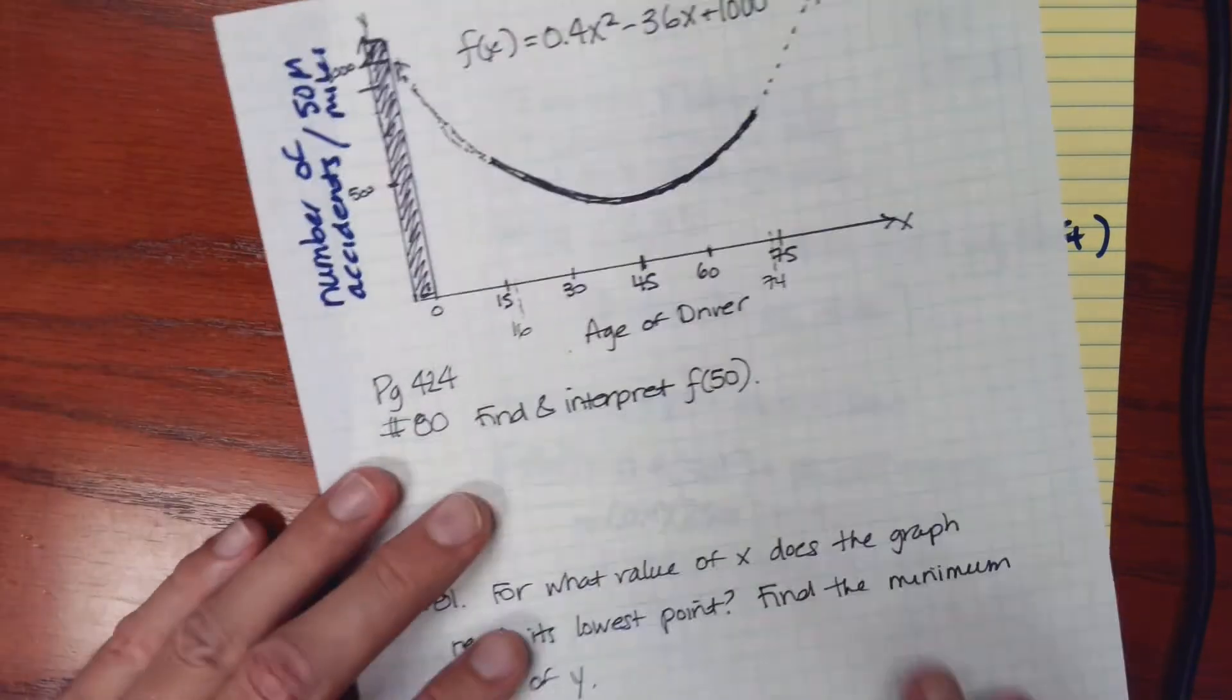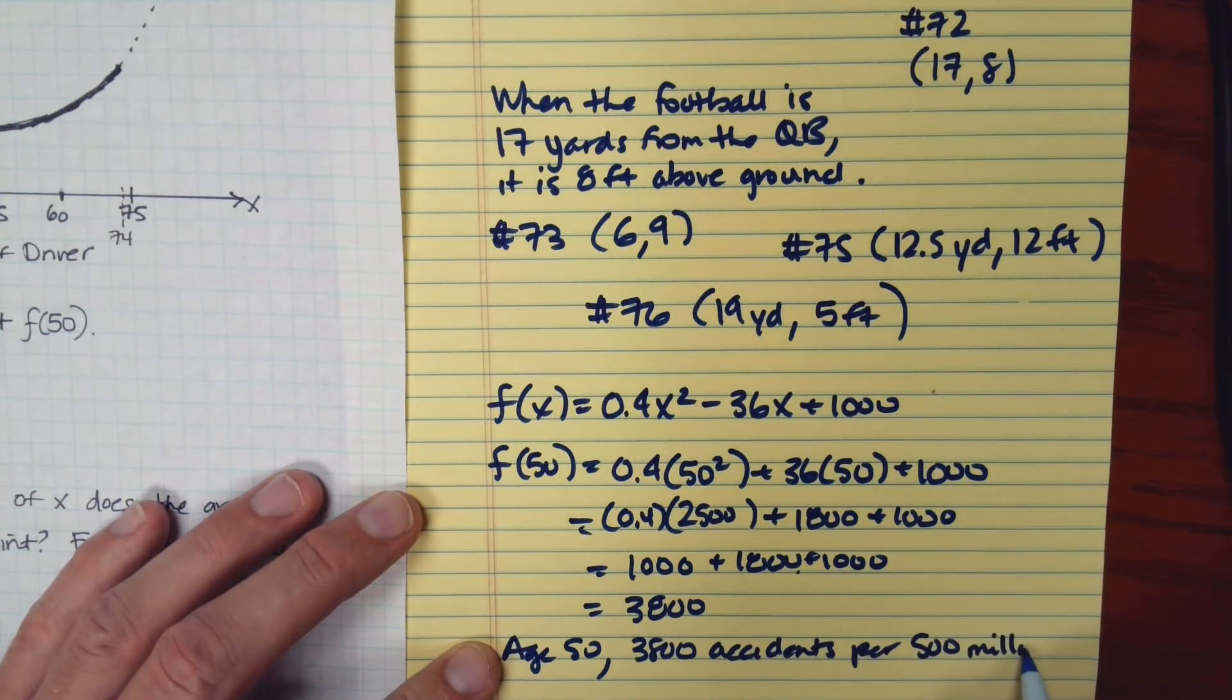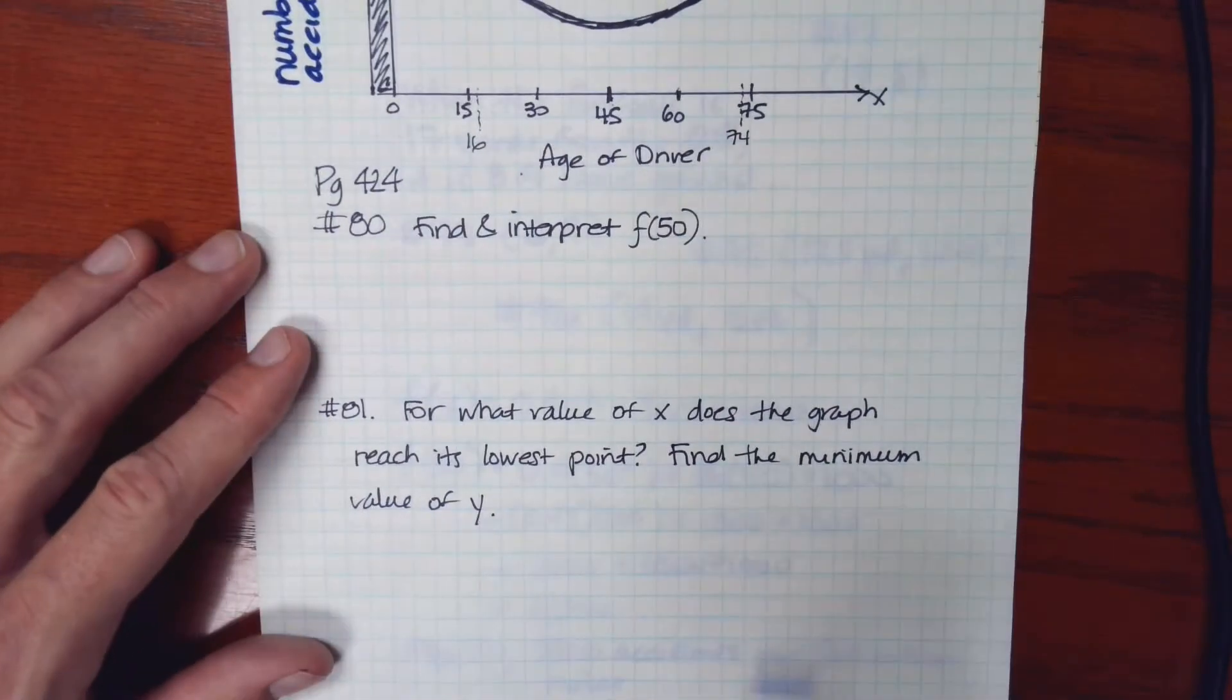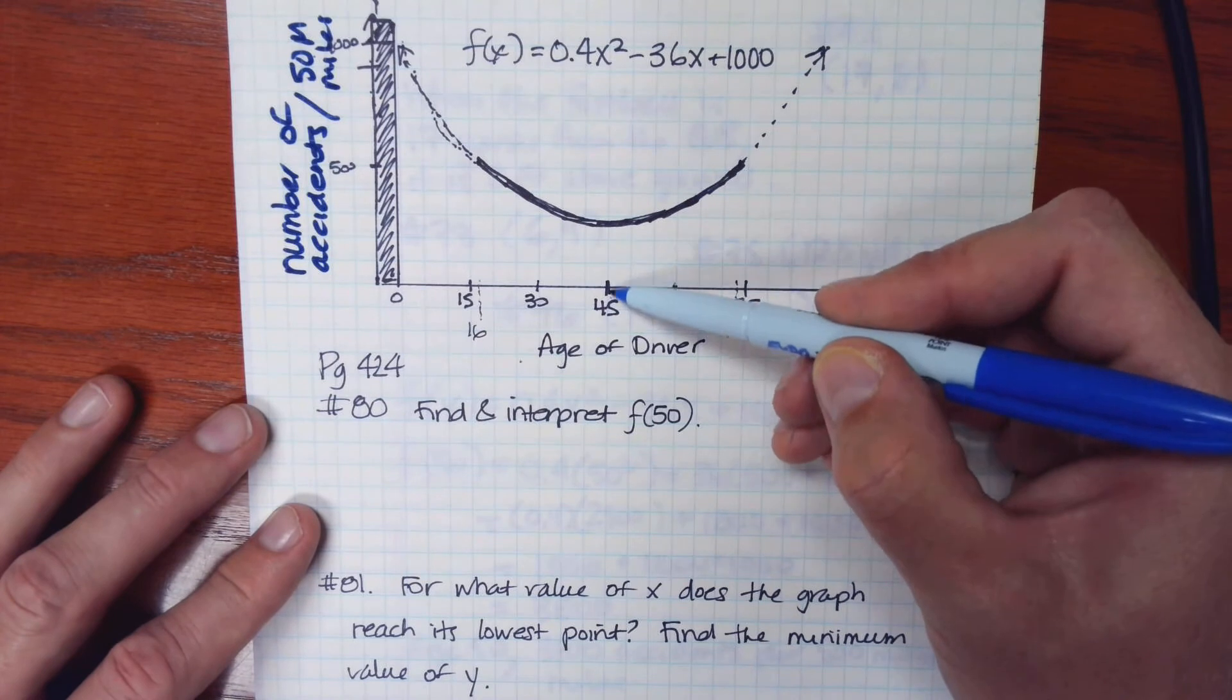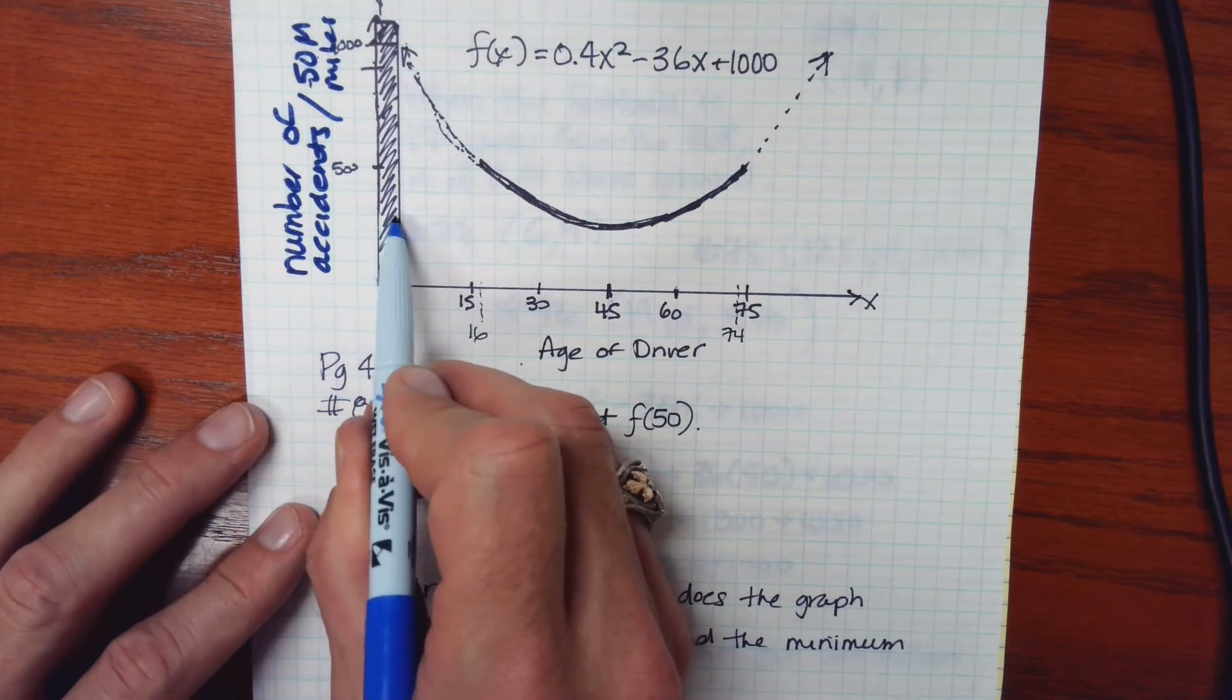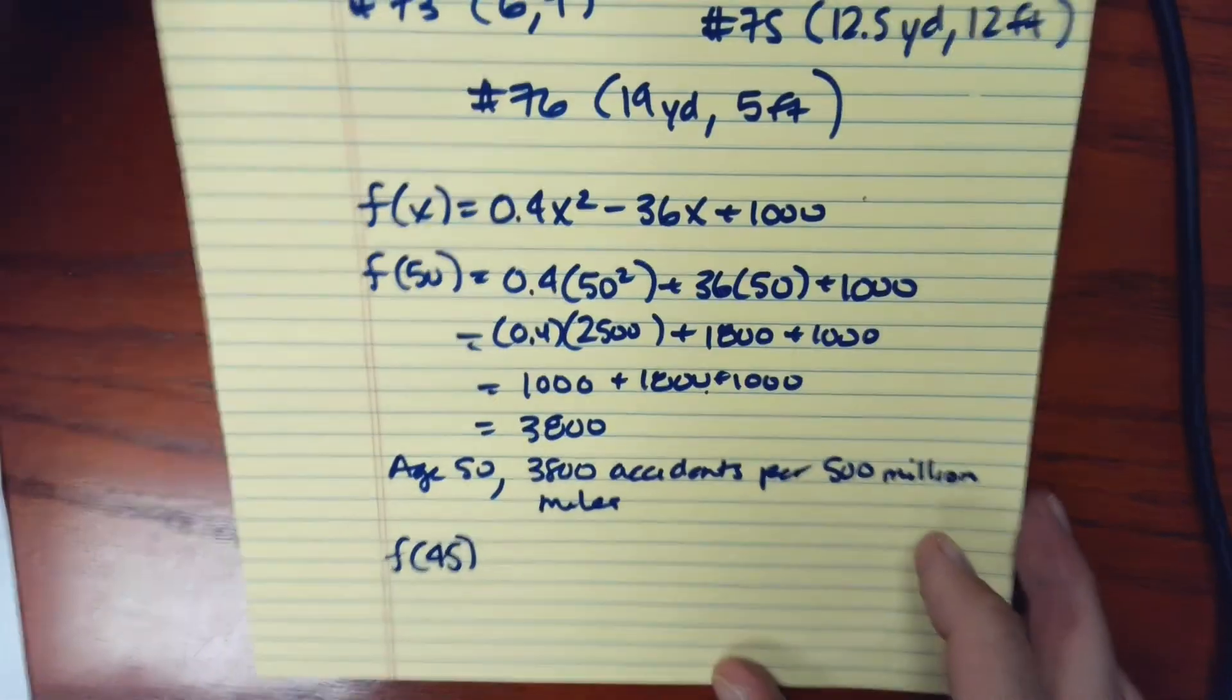And remember, that's accidents per 50 million miles. We're also asked for what value of x does the graph reach its lowest point. That looks to me like the lowest point is the x value is 45. So for drivers age 45, that's when we expected the lowest number of accidents per 50 million miles. And if we wanted to find that exact value, we'd have to find f of 45. And so I'll leave you to do that on your own. So to answer the next question, evaluate f of 45.